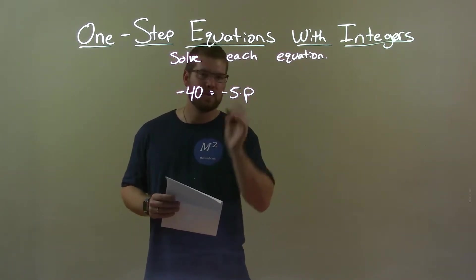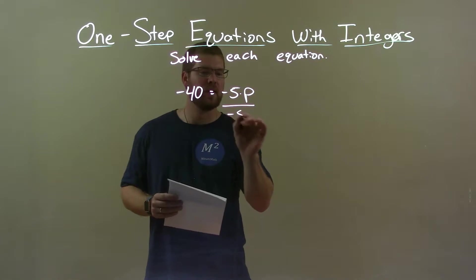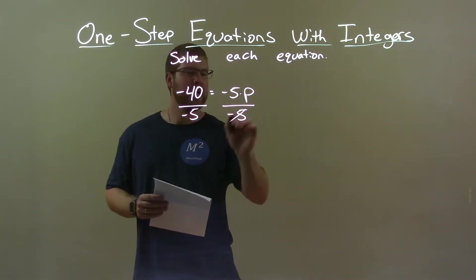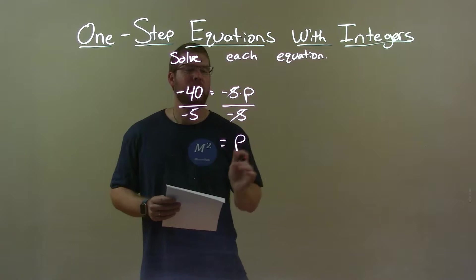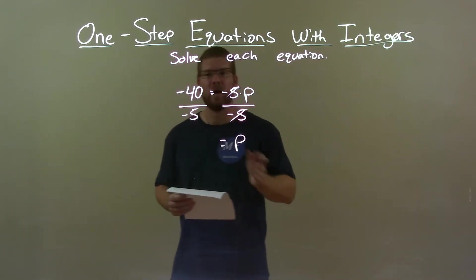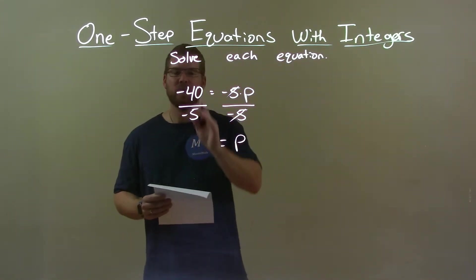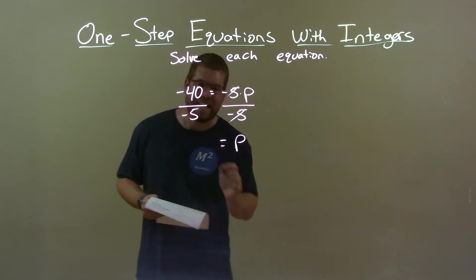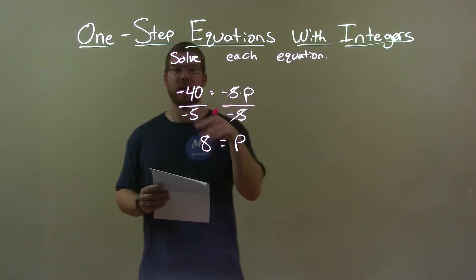Opposite multiplication which is going on there is division. So I divide both sides by negative 5. Negative 5s cancel and that gives me positive p by itself on the right. Now on the left, negative 40 divided by negative 5 is a positive 8. Negative divided by negative is a positive.